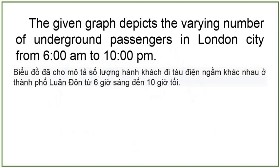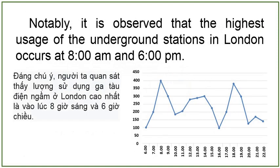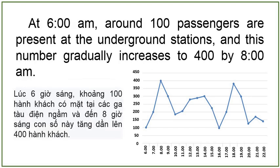The given graph depicts the varying number of underground passengers in London City from 6 a.m. to 10 p.m. Notably, it is observed that the highest usage of the underground stations in London occurs at 8 a.m. and 6 p.m. At 6 a.m., around 100 passengers are present at the underground stations and this number gradually increases to 400 by 8 a.m.